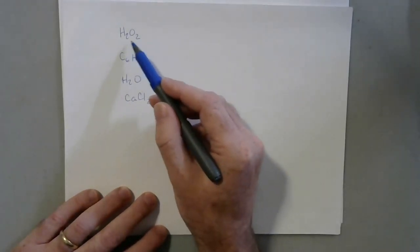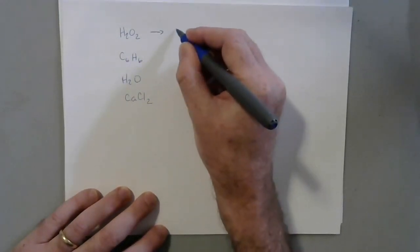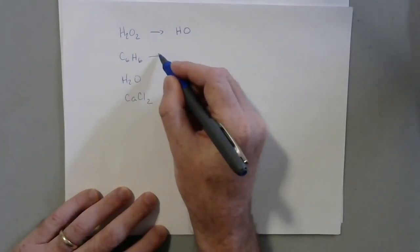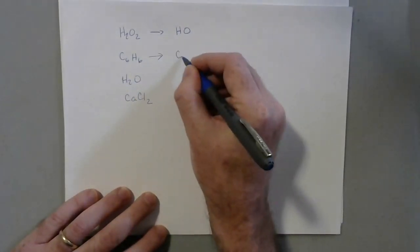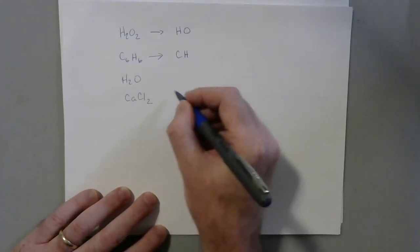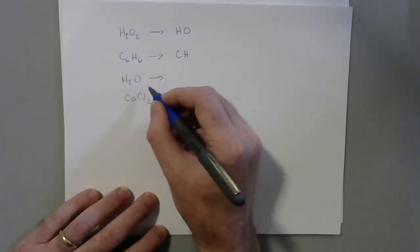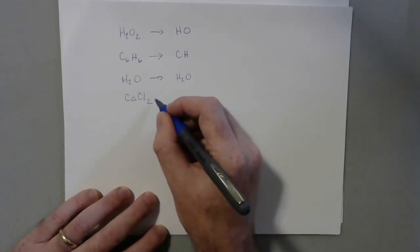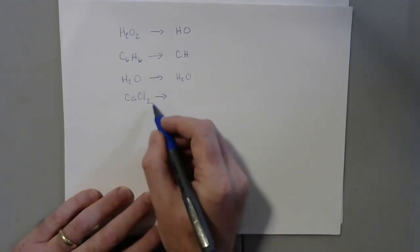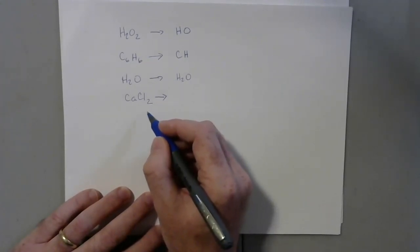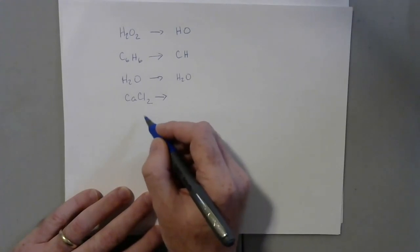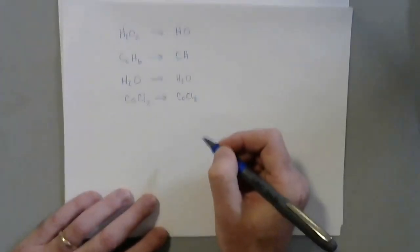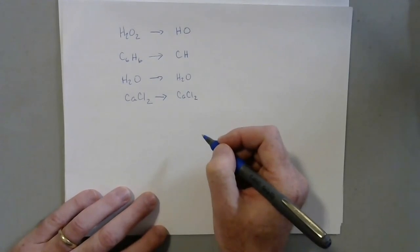If you look at hydrogen peroxide, H2O2, we can pull a factor of 2 out and just have an empirical formula of HO. For C6H6, we can pull a factor of 6 out and just get CH for an empirical formula. Water, we can't reduce that anymore, so H2O is both the empirical and the molecular formula. Calcium chloride is an ionic compound, and generally you can't reduce their formulas to a simpler one. So the empirical formula is the formula for an ionic compound because that's the way the compound is defined in terms of simplest whole number ratios.